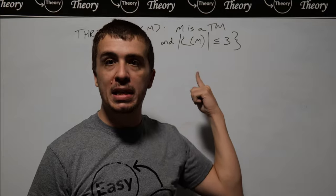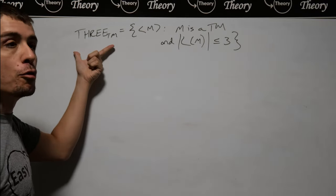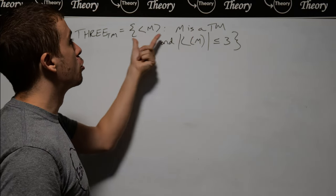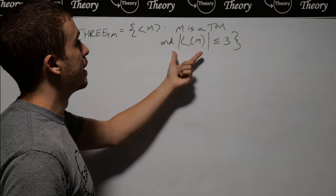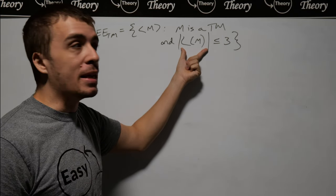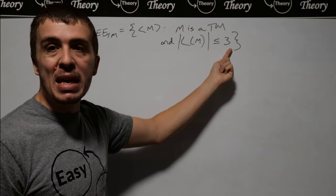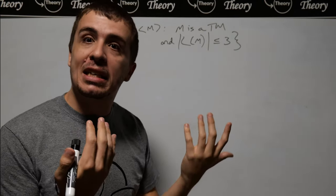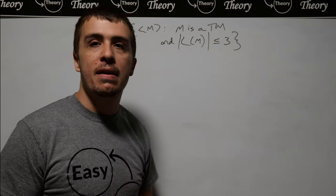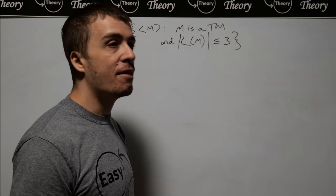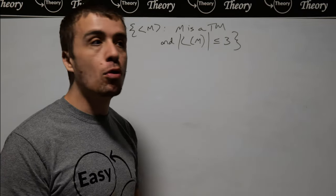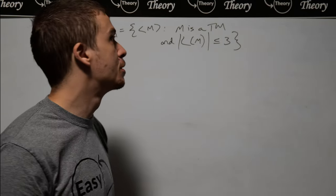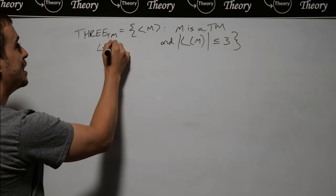I want to apply Rice's theorem to this language, which I'm going to call 3TM — the set of Turing machine descriptions where the language of the machine has at most three strings in it. If a machine accepts zero things, that's at most three. Two strings — okay. Three strings — okay. Four strings — not in 3TM. I want to show this is undecidable. You could use a reduction from the acceptance problem, but the proof is quite complicated, so I want to show this via Rice's theorem.